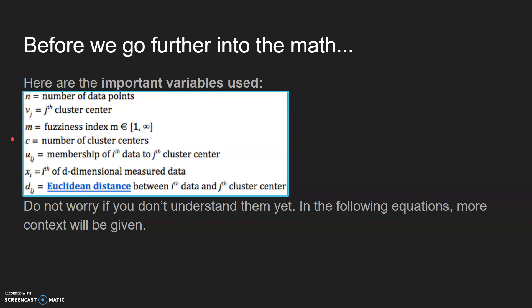M is the fuzziness index, which could be like 1 to infinity. It just shows how fuzzy the algorithm should be. C equals the number of cluster centers.